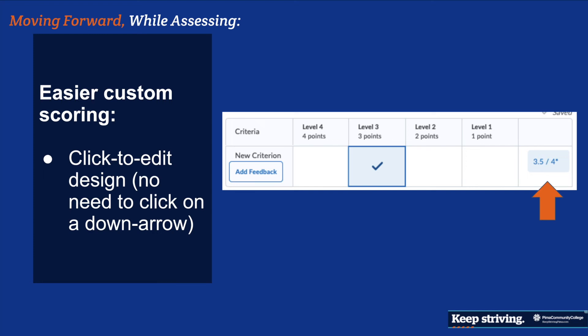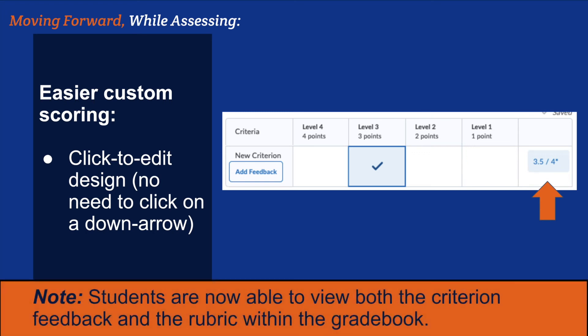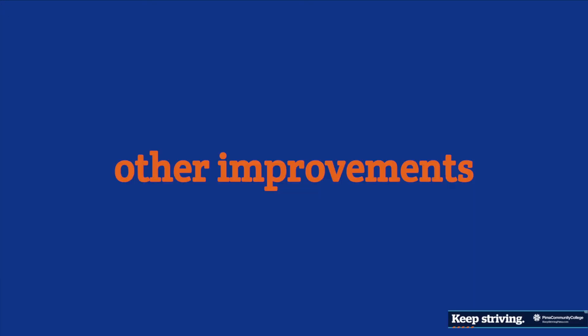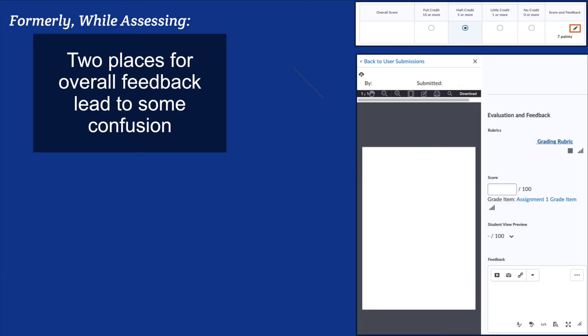There's also an easier scoring convention now. You can simply click on the total score and change it — for example, changing a three to a three-point-five. Students are now able to view both the criterion feedback and the rubric within the gradebook, making it easier for both students and instructors.